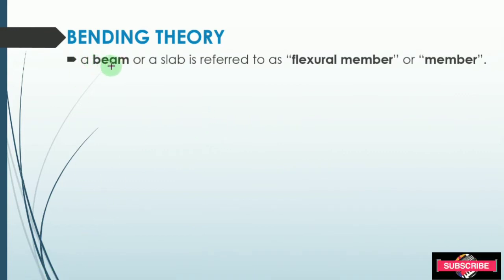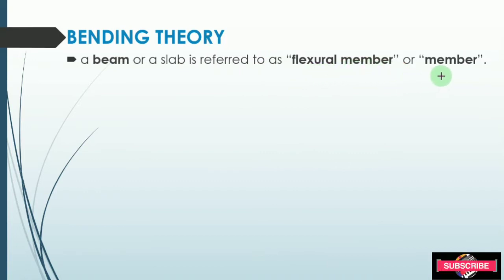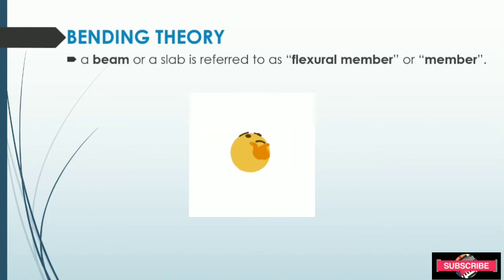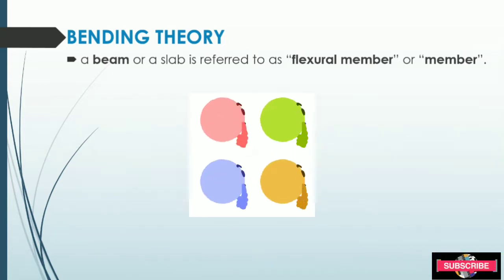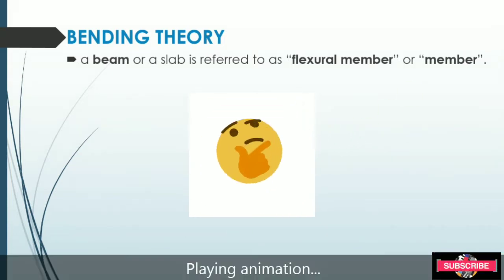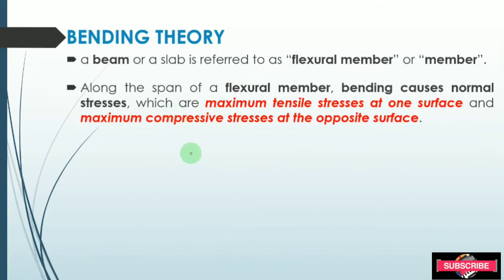To start with, we have an introduction to bending theory, in which a beam or slab is referred to as a flexural member. This bending theory was first developed by Galileo and was later modified by Euler. Along the span of a flexural member, bending causes normal stresses, which are maximum tensile stresses at one surface and maximum compressive stresses at the opposite surface.